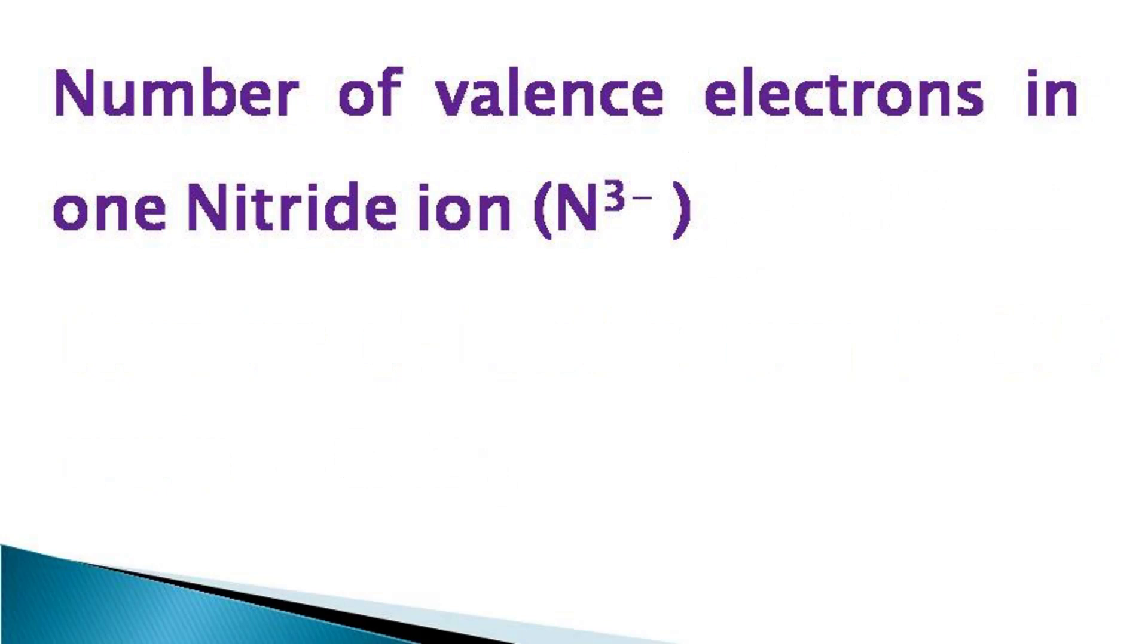Now we calculate the number of valence electrons in one nitride ion. As we know that in nitrogen the valence electrons are 5 in the outermost shell, and nitride ion is having 3 negative charge, that means it has got 3 extra electrons. That makes the total number of valence electrons equal to 5 plus 3, that is equal to 8.